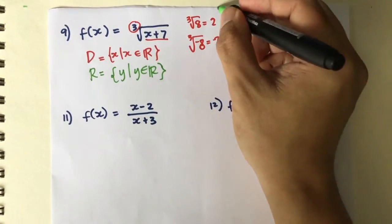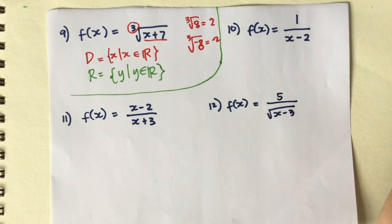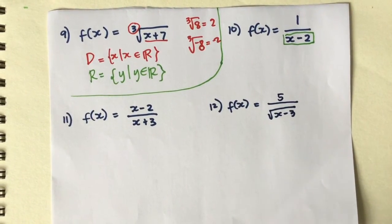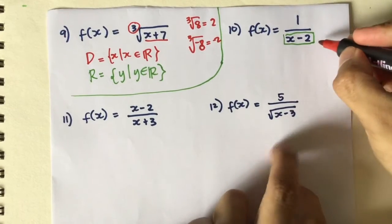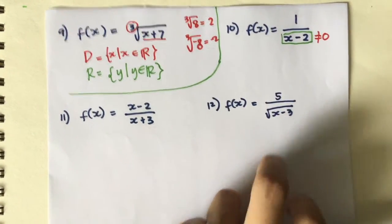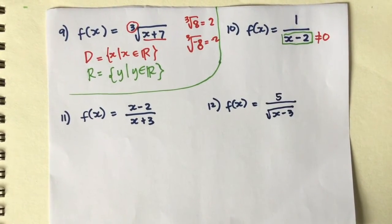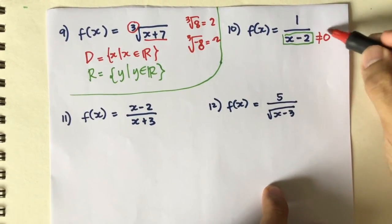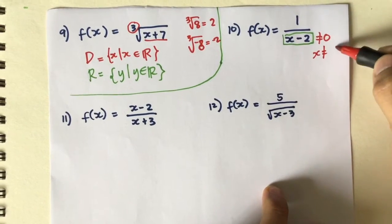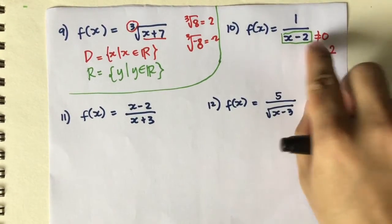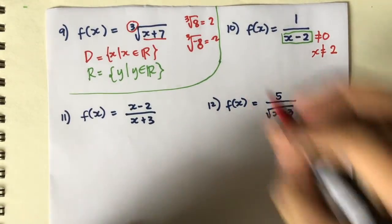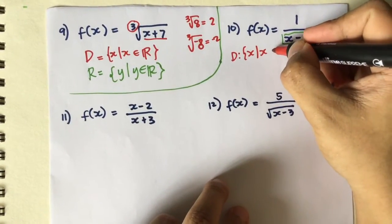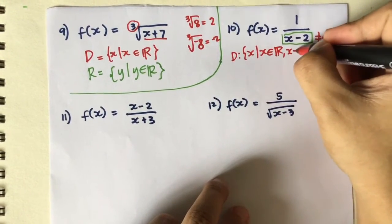For number 10, we have a fraction. When dealing with a fraction, the denominator must never equal 0, because that makes the solution undefined. So what numbers make the denominator 0? That means x should not equal positive 2, because 2 minus 2 gives 0. But you can use any other values — positive or negative — so the domain is all real numbers except x = 2.